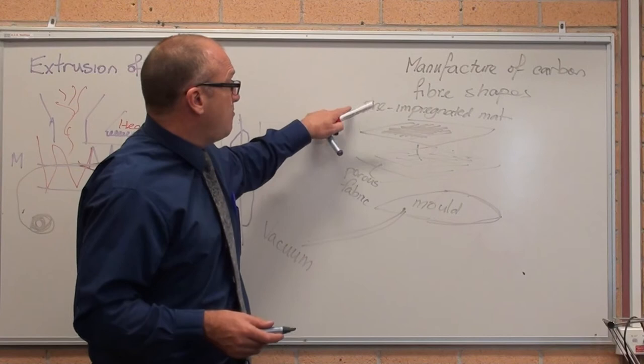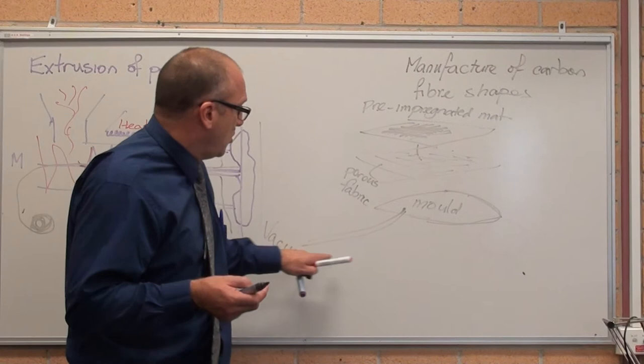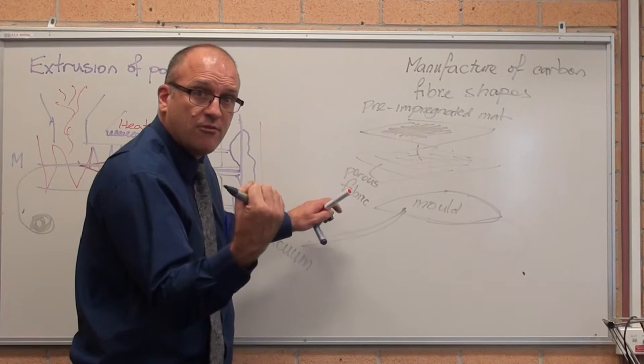He's a manufacturer of carbon fiber shapes. They get pre-impregnated carbon fiber mat that's pre-woven, put it under a porous fabric, put it on the mold and the mold is sucked in with a vacuum. The porous fabric sucks the carbon fiber onto the mold.